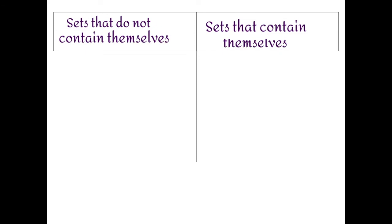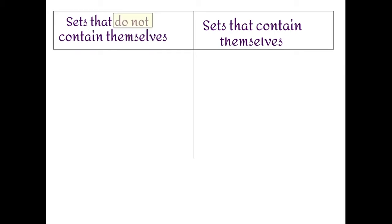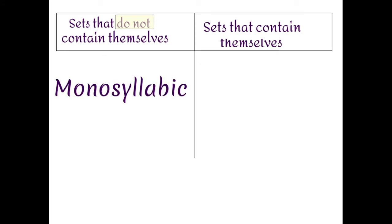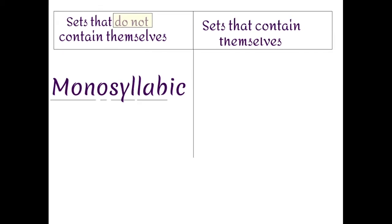Those two types of sets are pretty self-explanatory. The type of sets that do not contain themselves simply do not contain themselves. A good analogy would be English words that do not describe themselves. For example, the word monosyllabic, which means having one syllable, does not describe itself, since it has five syllables.